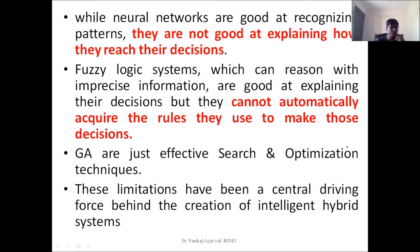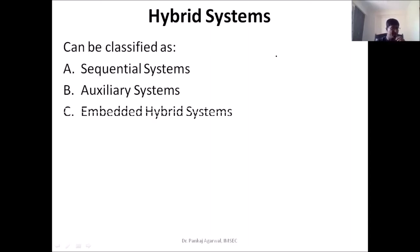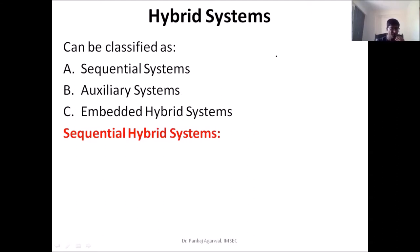So in summary, the limitations of each technology are the central driving force behind the creation of intelligent hybrid systems. Hybrid systems can generally be classified into three broad categories: sequential systems, auxiliary systems, and embedded hybrid systems. Let us discuss each one by one. In sequential hybrid systems, as the name suggests, the output of one technology is used as input to another technology — a pipeline-like structure.